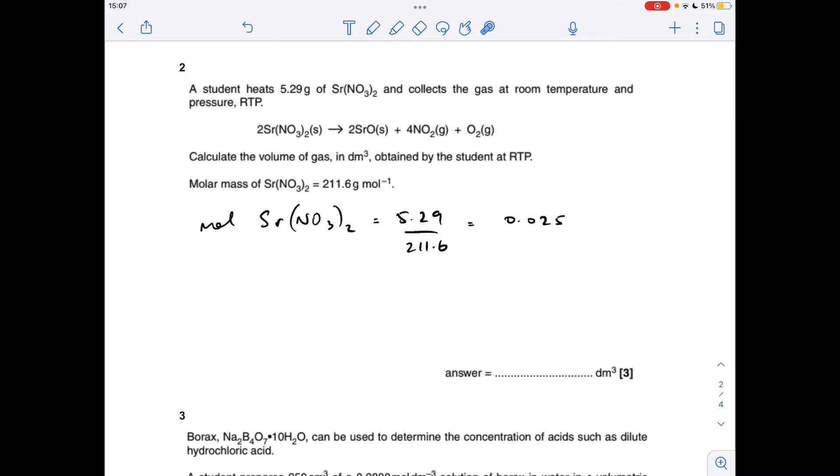Number two: so first thing to do is work out the moles of strontium nitrate, so mass over MR is 0.025. It's a two to five ratio for the strontium nitrate to gas, so to get the moles of gas it's five over two times the moles of strontium nitrate: 0.0625. Then to convert those moles to volume of gas at RTP, we multiply the moles by 24, the molar gas volume, and the answer is 1.50 decimeters cubed.